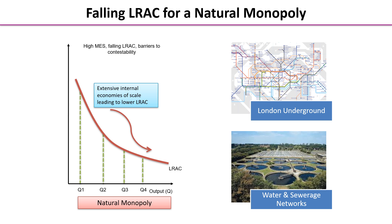Here we have an example of a natural monopoly long-run average cost curve, falling over the range of output from Q1 to Q2 to Q3 to Q4. In other words, there are extensive economies of scale in this particular industry.